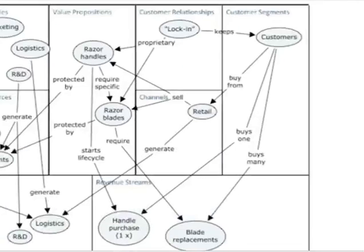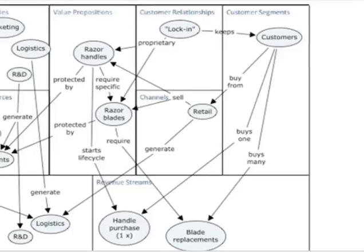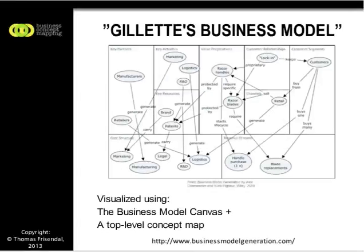If you start at the right, the customer segments: you have customers who buy one purchase of a handle, but many replacements of blades. Because the layout of the blades is proprietary, you have a lock-in situation. You sell through retail as your channels. Your value propositions are handles and blades — the blades need to be specific, that's why you can lock the customer in.